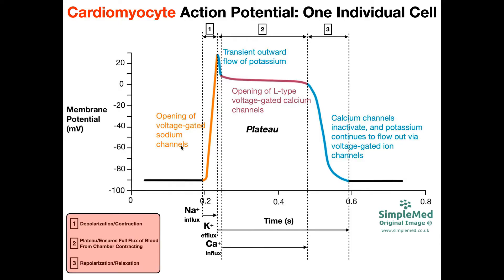Sodium is a positively charged ion, so when sodium comes into the cell it brings positive charge in, taking the cell from being negative to more positive. A lot of sodium comes in, and you can see it spikes the membrane potential from about negative 90 up to about positive 20 or positive 30. This phase is the depolarization, or initial depolarization, due to the fast influx of sodium ions.